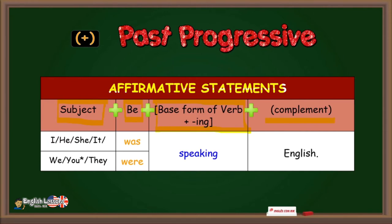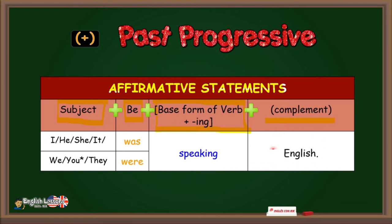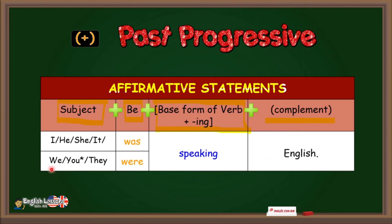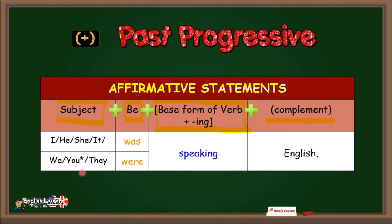Examples: I was speaking English. She was speaking English. We were speaking English. They were speaking English.